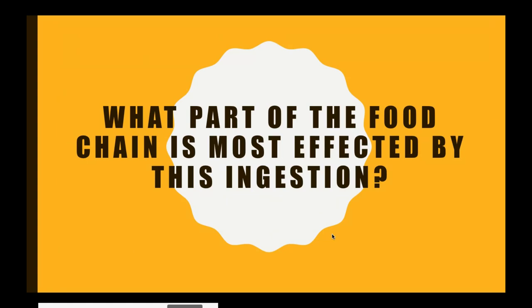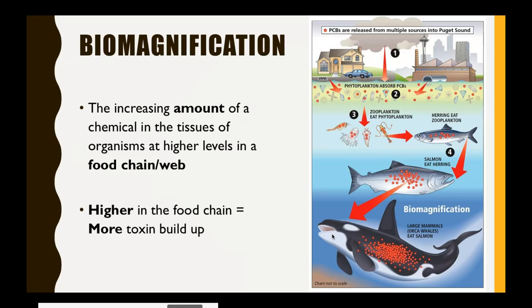As an animal accumulates toxins and something else eats it, we have to think about what part of the food chain is most affected by this ingestion. Is it more dangerous to eat primary consumers, or secondary and tertiary consumers? To answer this we have to look at biomagnification. Biomagnification is the increasing amount of a chemical in the tissues of organisms at higher levels in a food chain or food web.